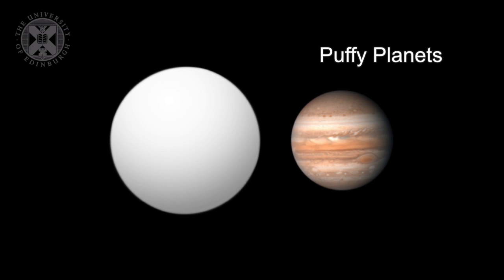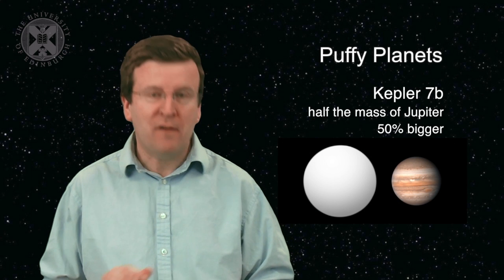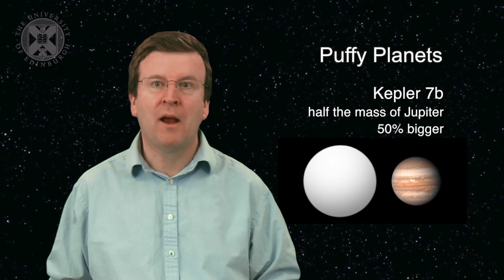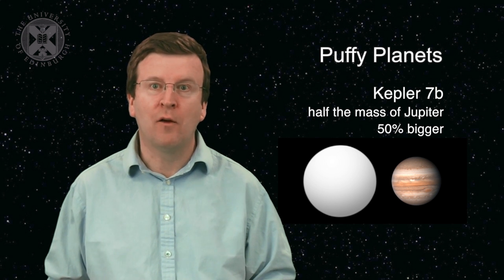Some even more extraordinary planets have been found that are bigger than Jupiter, and we call these puffy planets. Some of them, such as Kepler-7b, half the mass of Jupiter but 50% bigger. And this planet, Kepler-7b, orbits its star every five days. It's very close.